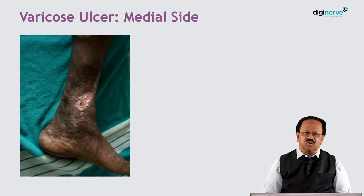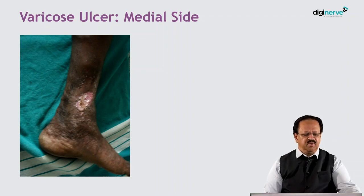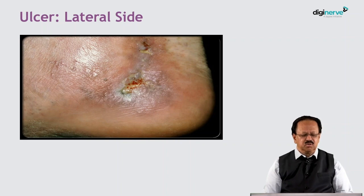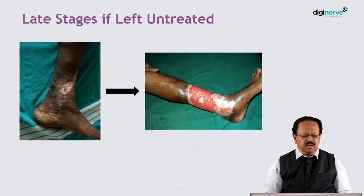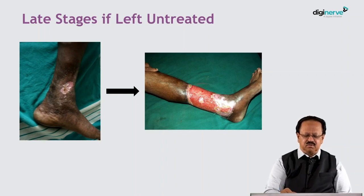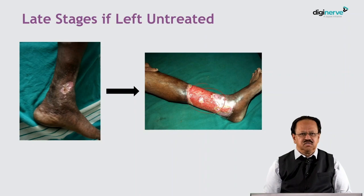Venous ulcers are very common on the medial side just above the medial malleoli and they are very resistant to heal. Ulcers can also occur on the lateral side just below the lateral malleoli, but they are very rare. If left untreated, these venous ulcerations can lead to larger loss of skin and lead to large ulcers which become very difficult to treat.